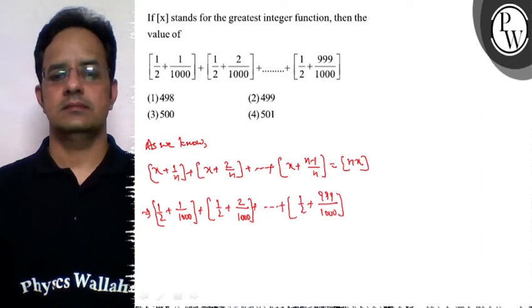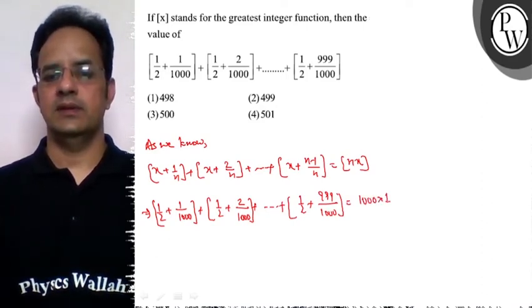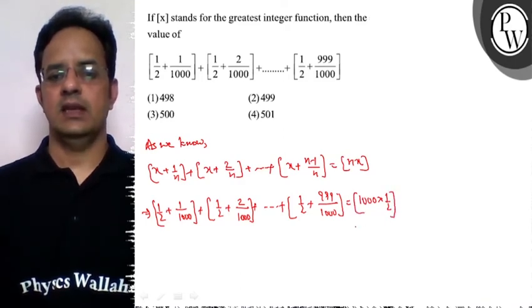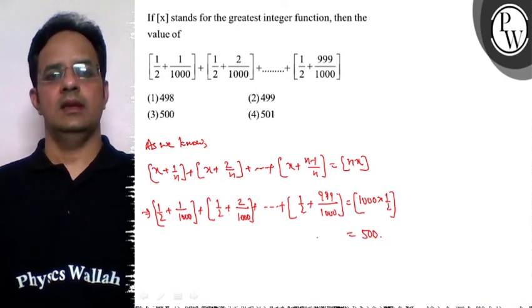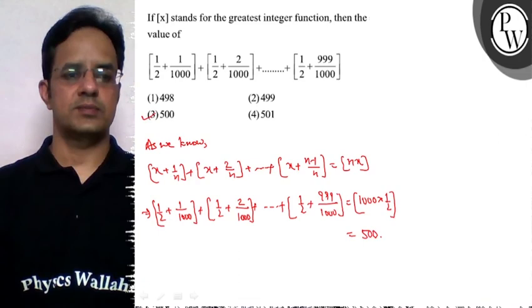So it is equal to thousand multiplied with one upon two, the greatest integer, which is equal to 500. The final answer to this problem is that option three is the correct option.